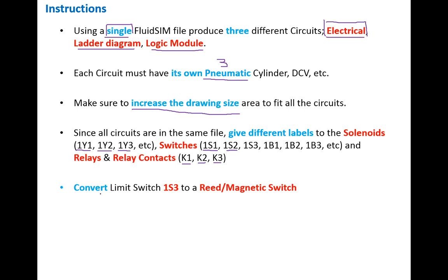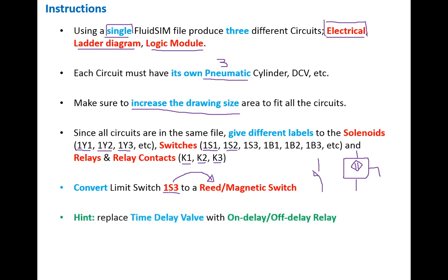There is one requirement: limit switch 1S3 must be converted to or replaced by a reed switch or magnetic switch. In electrical circuits the limit switch is shown in the standard way, but here we are required to replace it with a magnetic switch that has three terminals. This replacement applies only to 1S3 — not to the other limit switch. As a hint, replace the time delay valve with its corresponding time delay relay. You may choose either an off-delay relay or an on-delay relay depending on your design.